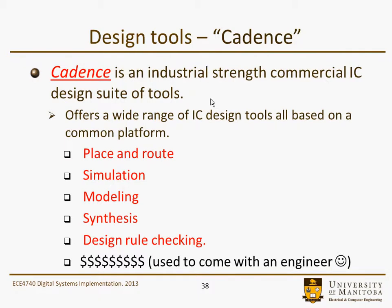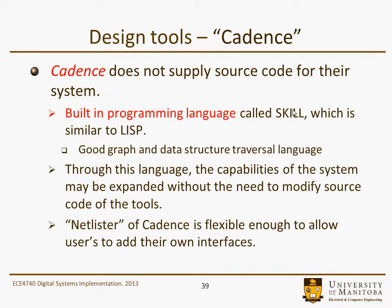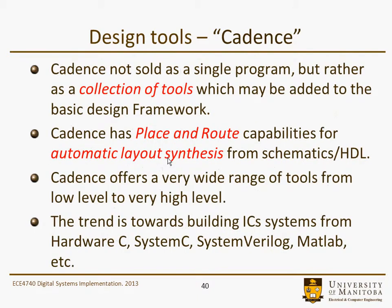Cadence is an industrial-strength commercial suite of tools offering a wide range of IC design tools on a common platform: place and route, simulation, modeling, synthesis, design rule checking, and design verification. It's very expensive — at one point it came with an engineer. Cadence doesn't supply source code but you can interact with it via a built-in language called Skill, similar to LISP, well-suited for managing data structures. It's a collection of tools — placement means placing components and routing connects them up, essentially automated layout synthesis from a schematic or HDL.